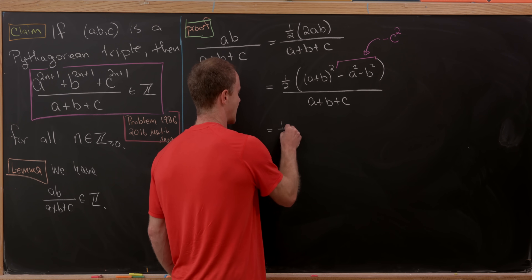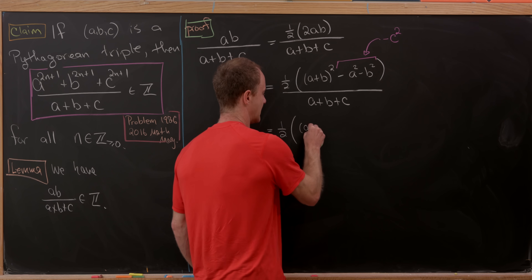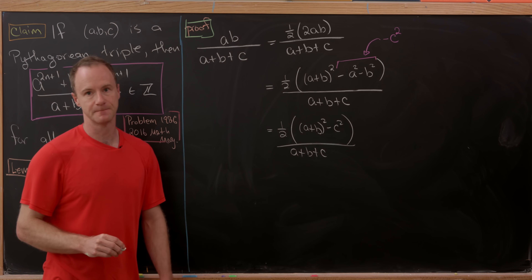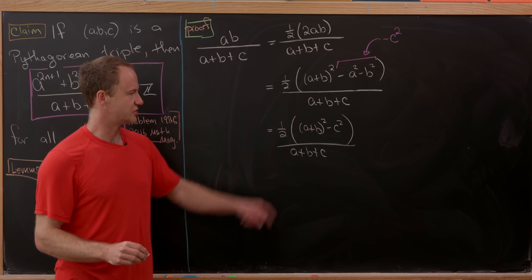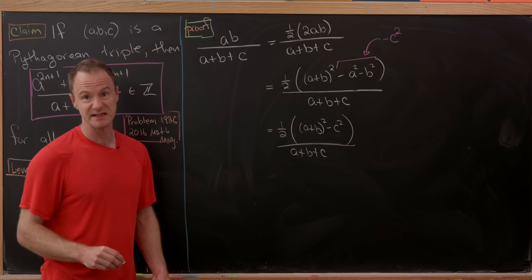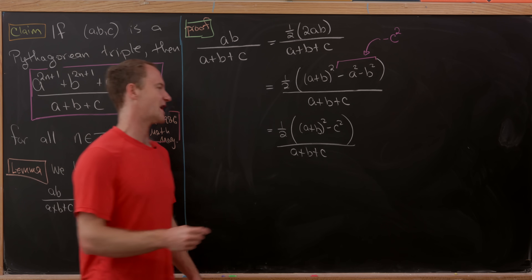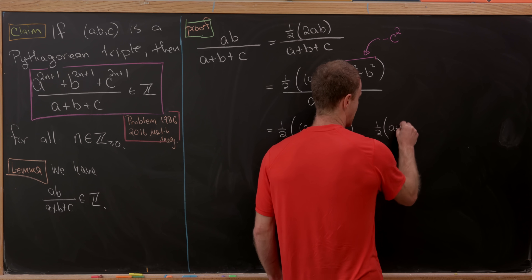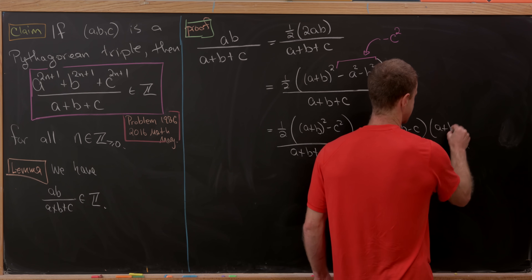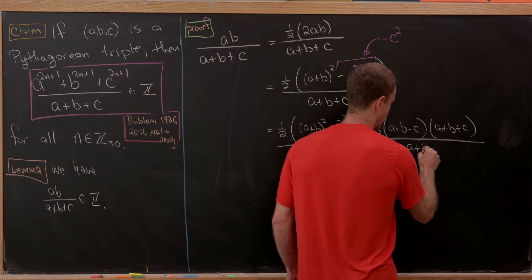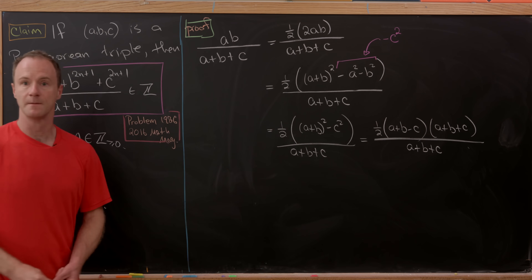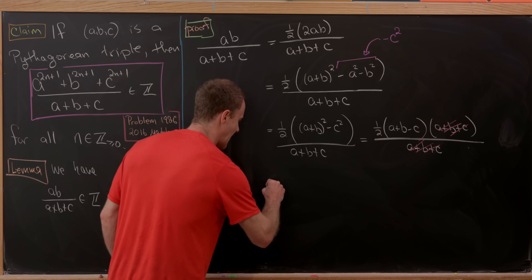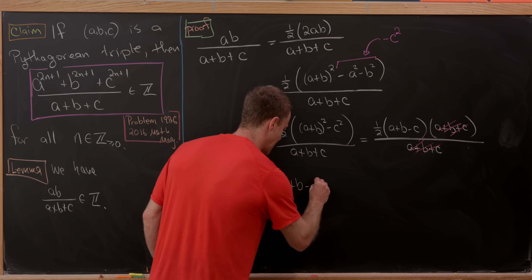Recalling our Pythagorean triple assumption, we can take this difference of a squared and b squared and write it as subtracting c squared instead. So in the numerator we'll have one half times (a + b)² minus c². In the denominator we have (a + b + c). Next, we notice that what's inside the large parentheses is a difference of squares, which factors as (a + b − c) times (a + b + c), all over (a + b + c). We get immediate cancellation, leaving (a + b − c) over 2.